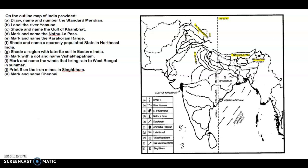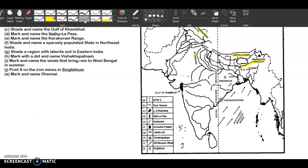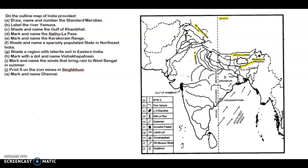The next question is to shade a region with laterite soil in eastern India — I've shaded this region which has laterite soil. They'll be asking you about other soils as well, like yellow and red soil, so you'll have to learn all of them. Then we have southwest monsoon winds.